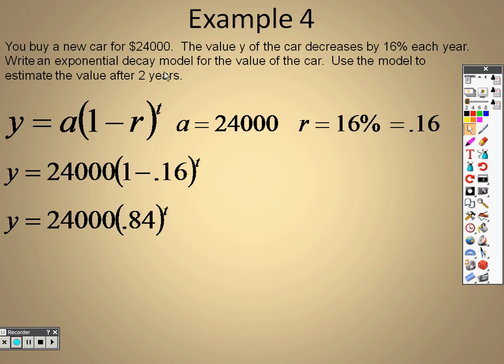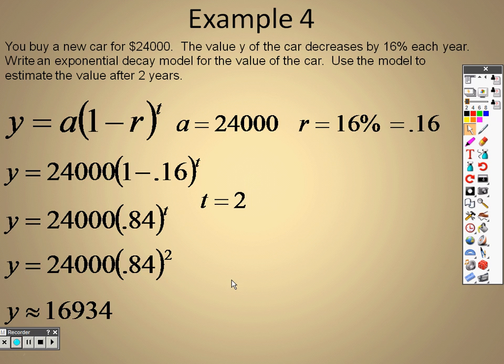So now I have that T. It says use the model to estimate the value of the car after T years. So T being 2. So we want to plug in a 2 for the years. So I plug a 2 in there for T, and all you need to do in your calculator is type in 24,000 times parentheses 0.84 parentheses, then squared, and you end up getting approximately $16,934.